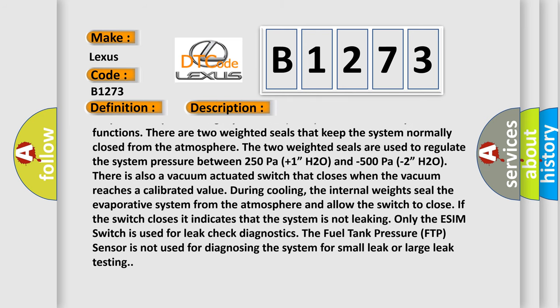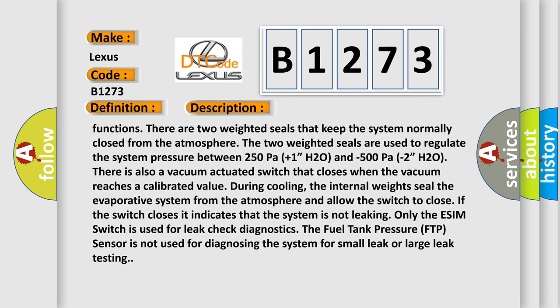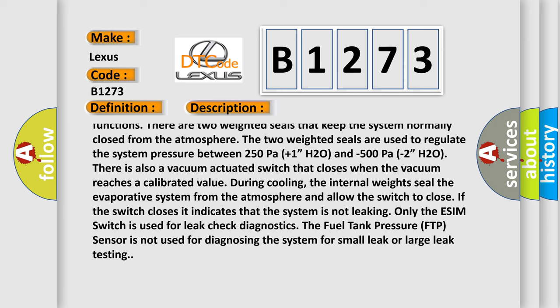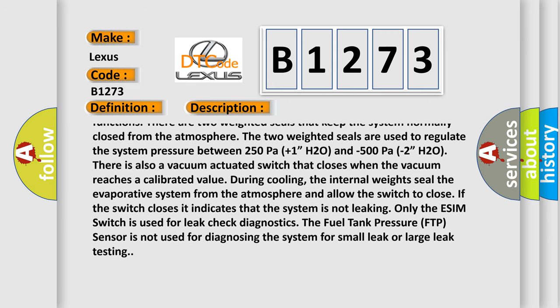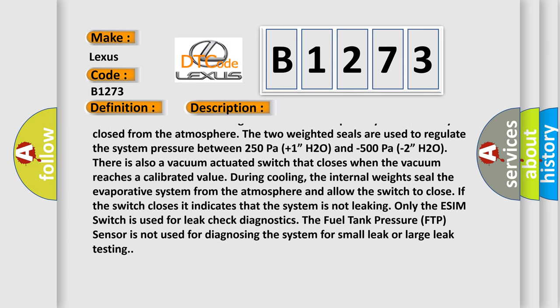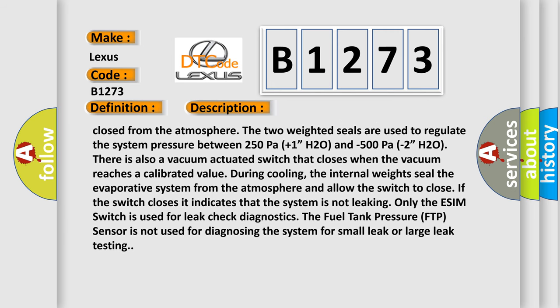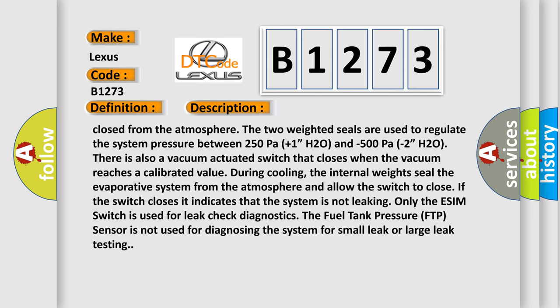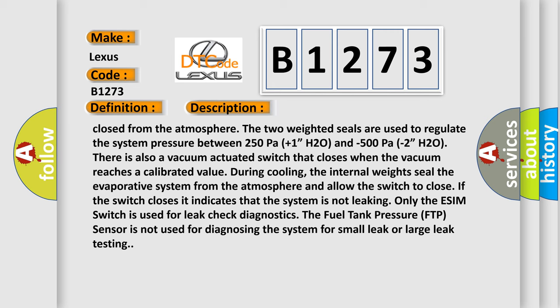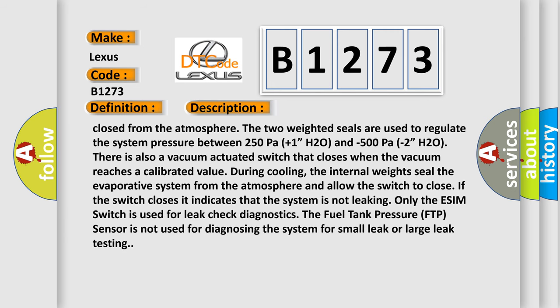There is also a vacuum actuated switch that closes when the vacuum reaches a calibrated value during cooling. The internal weights seal the evaporative system from the atmosphere and allow the switch to close. If the switch closes, it indicates that the system is not leaking. Only the ESIM switch is used for leak check diagnostics. The fuel tank pressure (FTP) sensor is not used for diagnosing the system for small leak or large leak testing.